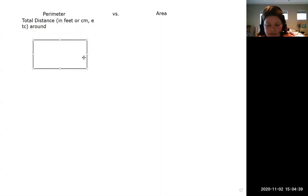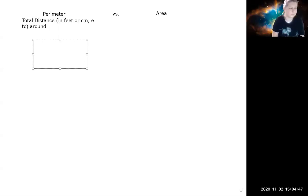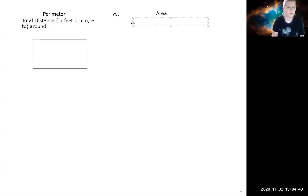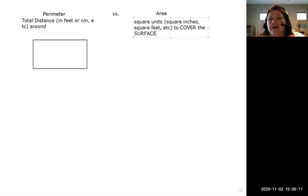And then what did you think area was? Area is like the surface, the cover of everything. And what did we cover it with? We always covered it with the same thing. The square inches. Yeah, square units. It could be square inches, square feet, et cetera. And you write to cover the surface. I love it. What a good way to put it.